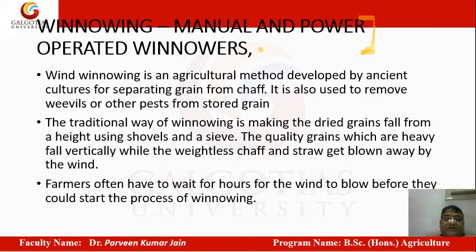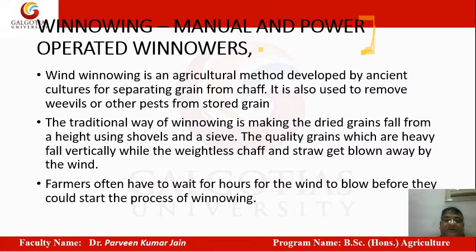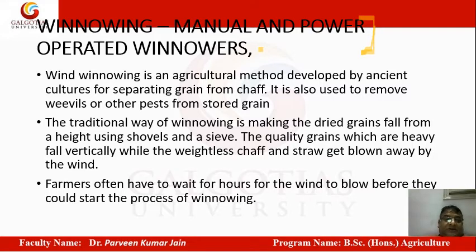Weather conditions are always uncertain, so a farmer cannot keep harvesting a wheat crop for 15 to 20 days as was common 30 to 40 years ago. Now, with the help of machines like combines and cutters, things are done very quickly. Seeing the weather conditions, grains are harvested fast and sent to markets for sale without wasting time. Hence mechanization is dependent on such engineering properties.